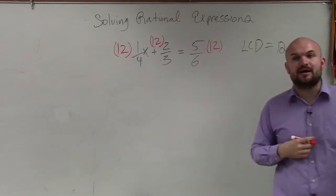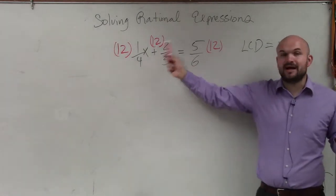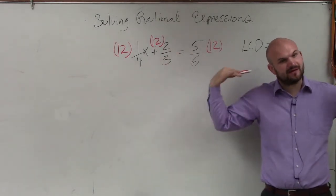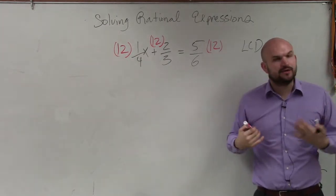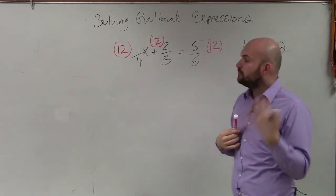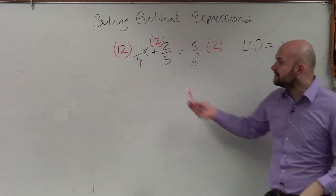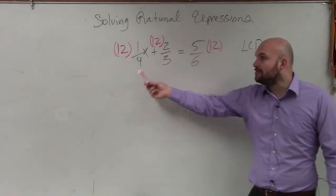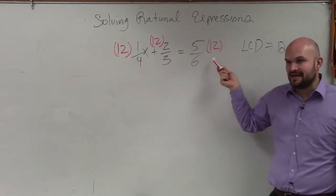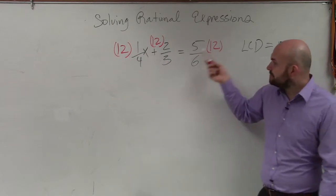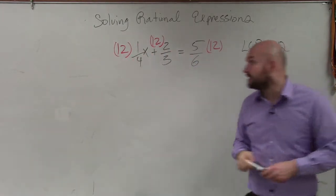So now what we do is once we multiply our LCD by everything, again, since we've multiplied it by every term on the left side and the right side, we're not changing the equation. We're just producing what we call an equivalent equation. But what's nice about the least common denominator is all of my denominators evenly divide into 12, so I can simplify that with every single denominator.